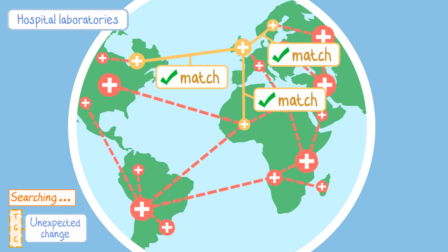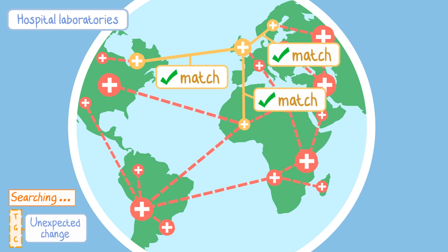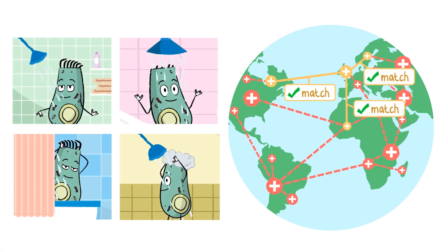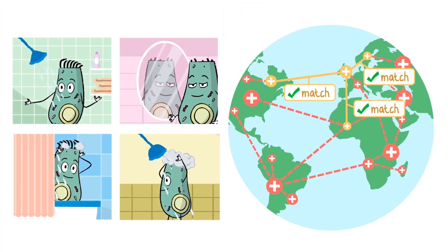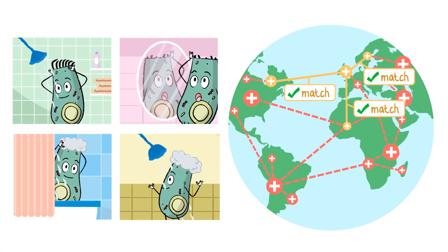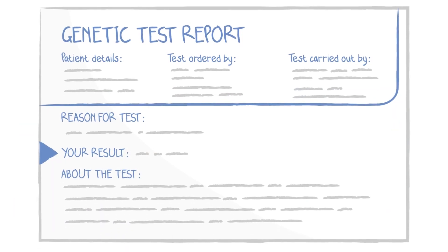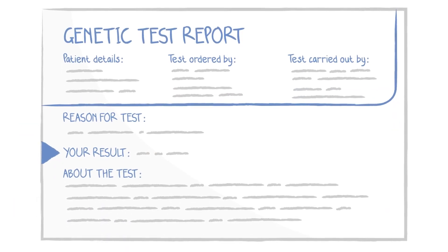they'll look at information from hospital laboratories to see if there's anyone else in the world with a similar change. In this example, there are three matches globally, so they will explore if these three people had any health problems. Using this information, scientists try to predict whether cells will be able to use the product to do their jobs in the body, and offer guidance about what this means.